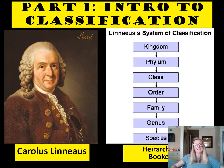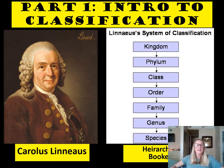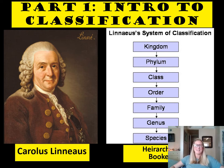One of the first things you should know about classification is the person who created the whole system. His name is Carolus Linnaeus, sometimes seen as Carl Linnaeus or Carl von Linnaeus — they're all the same person. He was a Swedish taxonomer and he pretty much invented the system called binomial nomenclature, which is how we name species.